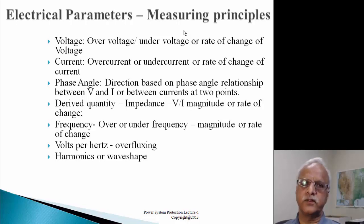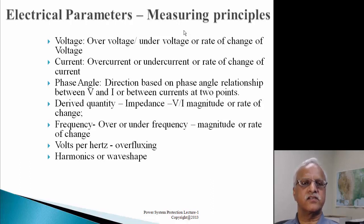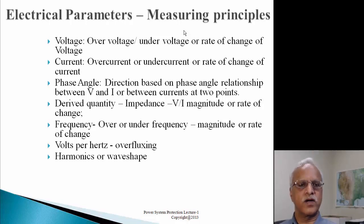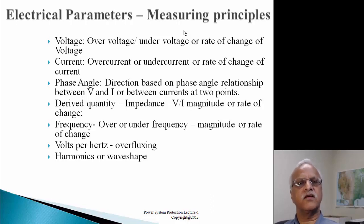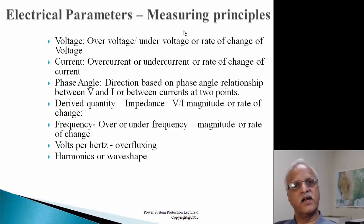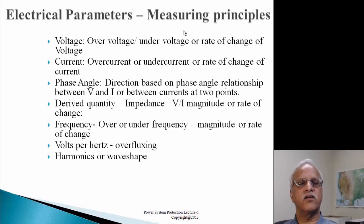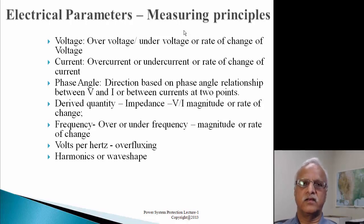Volts per hertz is another parameter used for protecting transformers, where the voltage-to-frequency ratio is always constant - it equals k times the flux density in the transformer. If that ratio increases, flux density increases, causing the transformer core to saturate and resulting in overheating. We also use the harmonic content in the sinusoidal current waveform to determine whether we are energizing a transformer - where we see 8 to 16 times rated current as inrush current - versus an actual fault. We look at the harmonic content to make this decision.